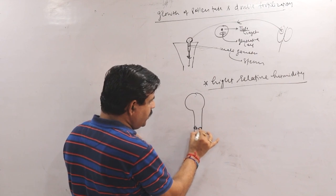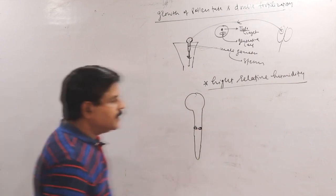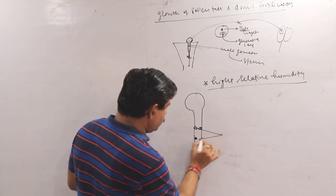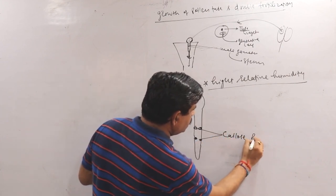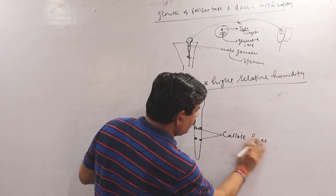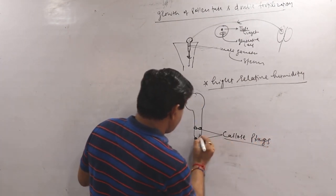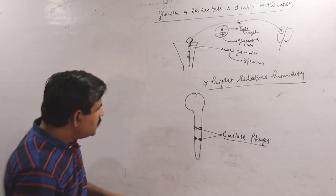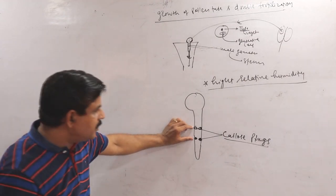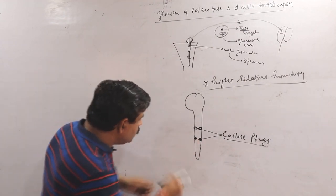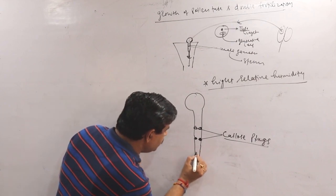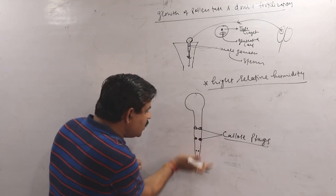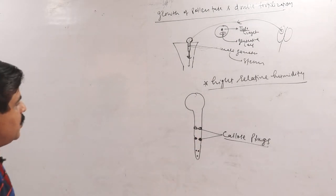At regular intervals along the pollen tube, there are callous plugs. These callous plugs restrict the cytoplasm to the apical region of the pollen tube, keeping the sperm nuclei and tube nucleus confined toward the tip.